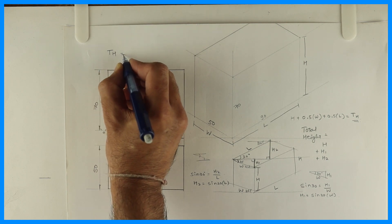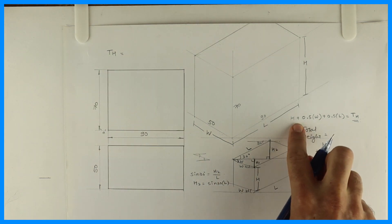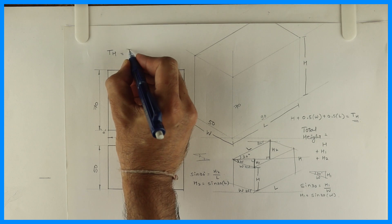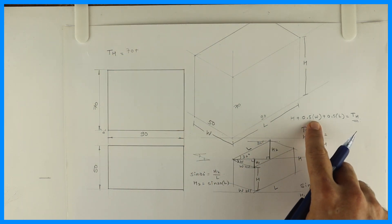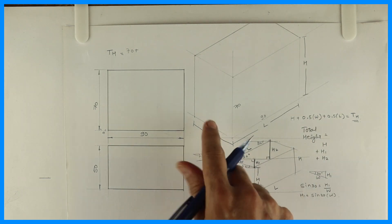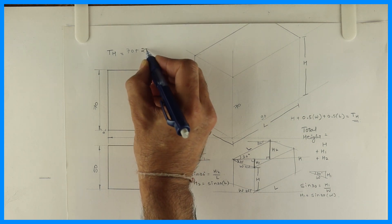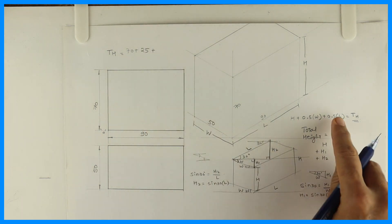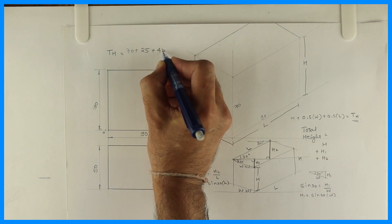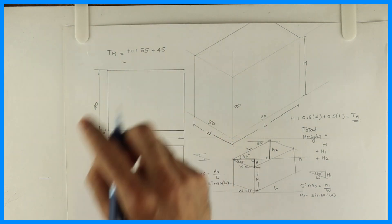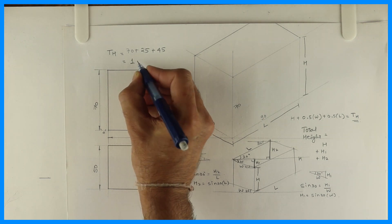So total height would be H. First we will write H. H is 70 plus 0.5 width which is 25, 0.5 into 50. And 0.5 L. L is 90. So half of that would be 45. So total would be 140.